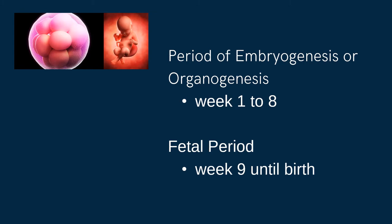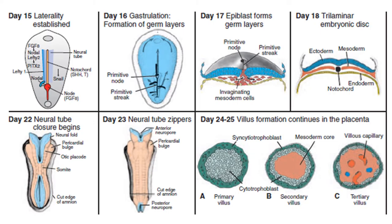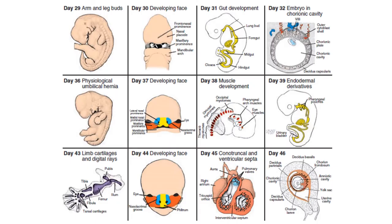Pre-natal development can be divided into two periods. The period of embryogenesis, otherwise known as period of organogenesis, would be from week 1 to week 8 of development. Meanwhile, starting week 9 until birth, we can refer to this as the fetal period. These diagrams will show the different developmental changes that will happen from day 1 up to day 46 of development. All of these are also found in Langman's Medical Embryology written by T.W. Sadler.